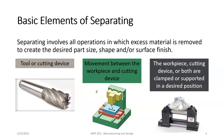The three elements we need are a tool or cutting device, movement between the workpiece and the cutting device, and a way to hold the workpiece or the cutting device. If we have movement between those two, one is going to be moving and the other is going to be held stationary. The definition of separating is all the operations in which excess material is removed to create the desired part size, shape, or surface finish. Separating is also commonly referred to as the material removal process.